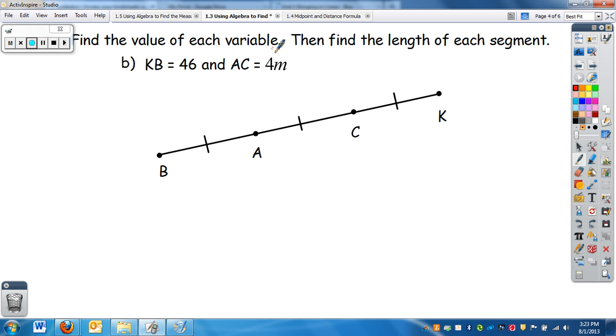So to find the value of each variable, find the length, and then find the length of each segment, where KB, the entire segment is 46. And then it tells me that AC is 4M. Now again, we have these little tick marks, which means these are three congruent segments. So if AC is 4M, CK is 4M, and BA is 4M.